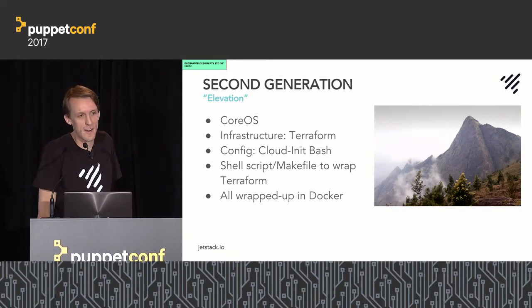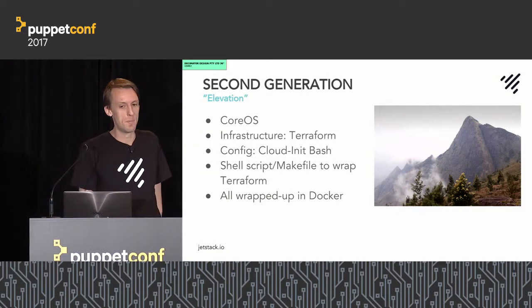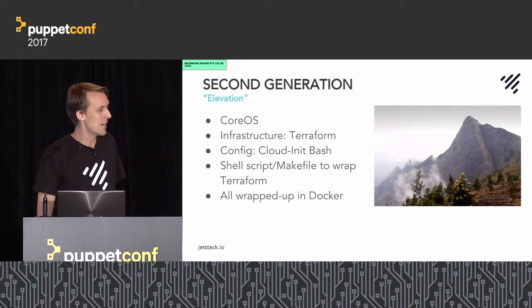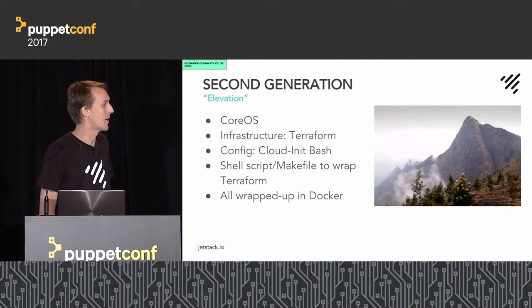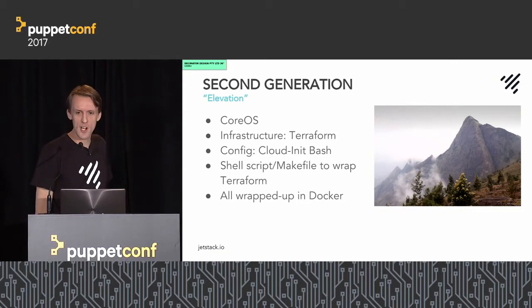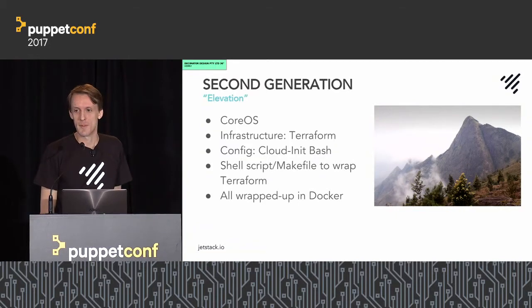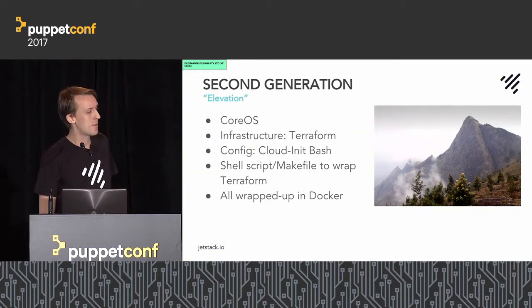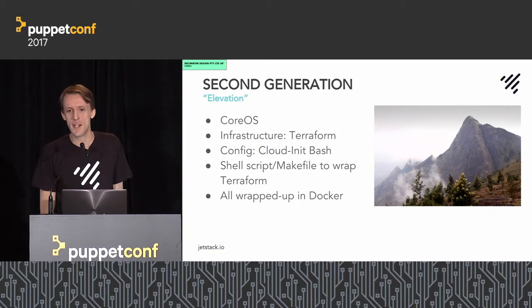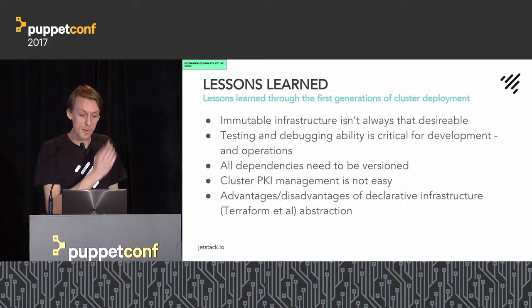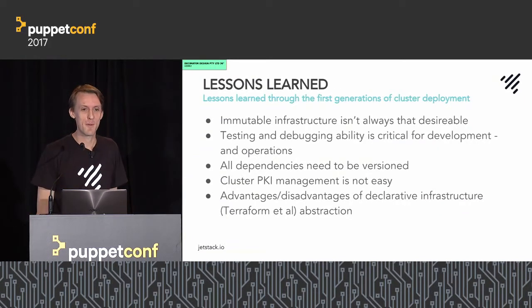To get things actually working we were using CloudInit and Bash — things were not particularly pretty. Pretty esoteric scripts that worked, but were rarely understood by anyone else. We introduced some shell scripting and make files to wrap it all together so we could operate Terraform, get the state files in the right place for different environments, and wrapped this all up with Docker. We got to a pretty good state where we could maintain multiple Kubernetes environments with different Terraform state.